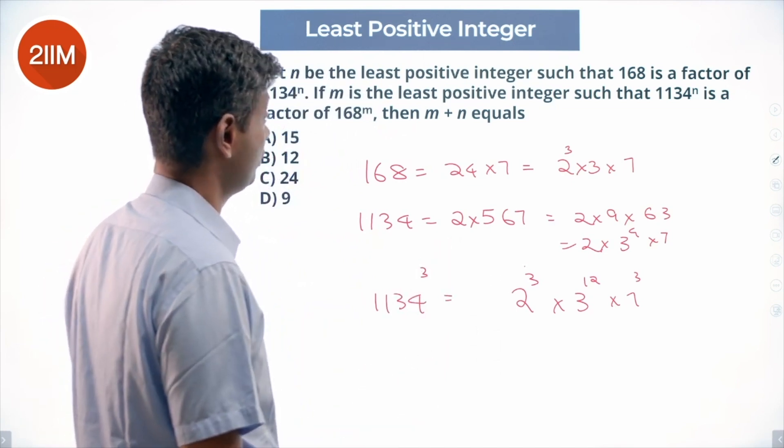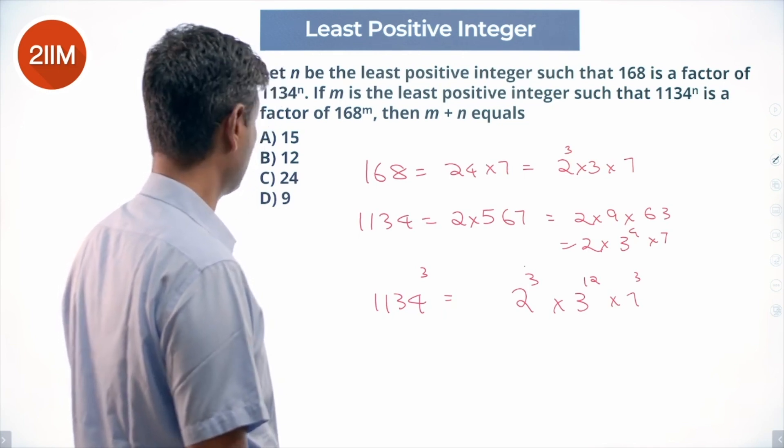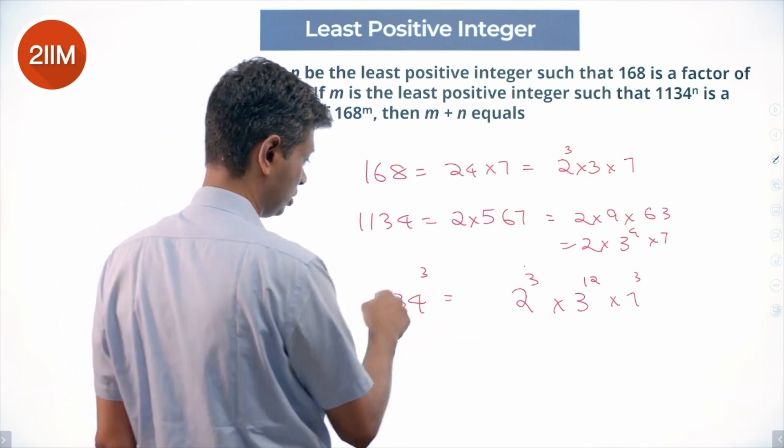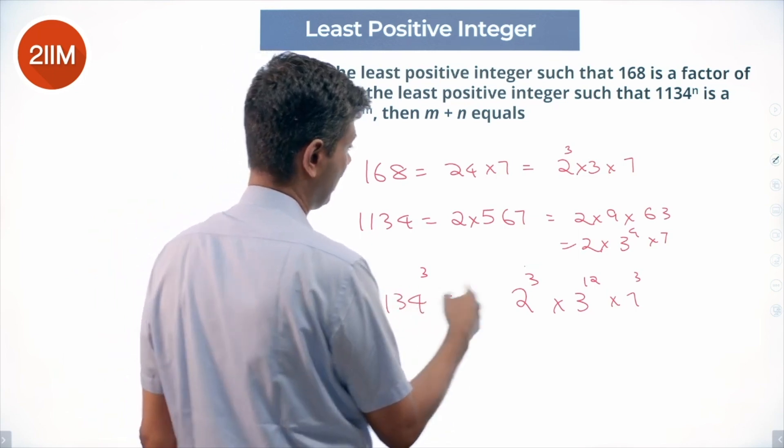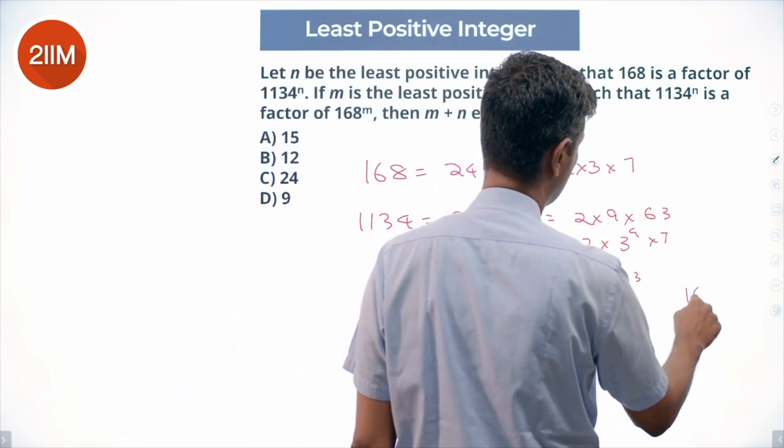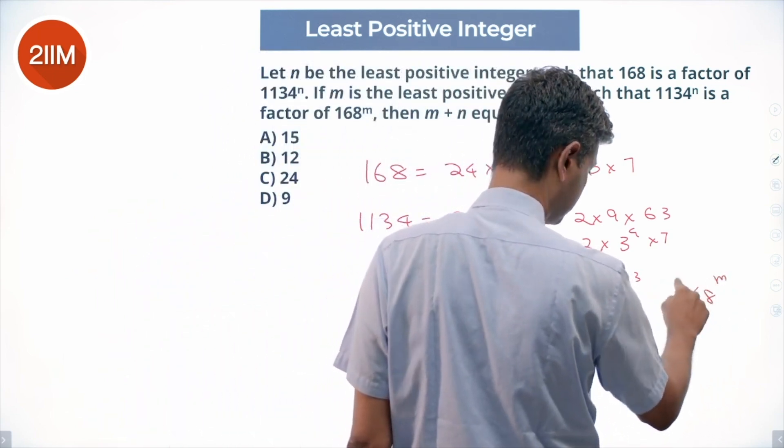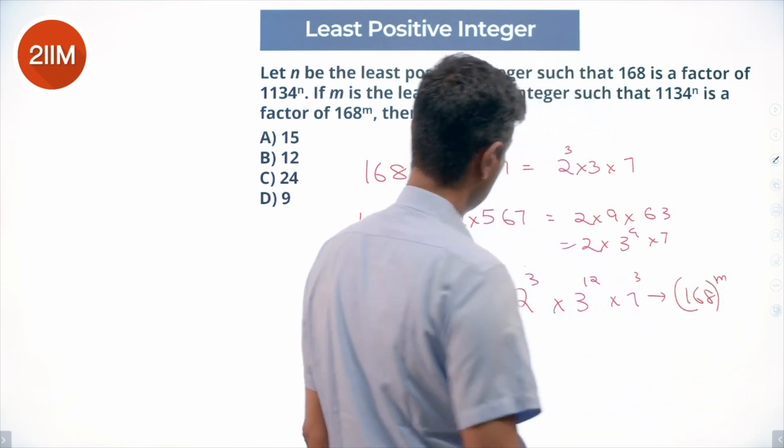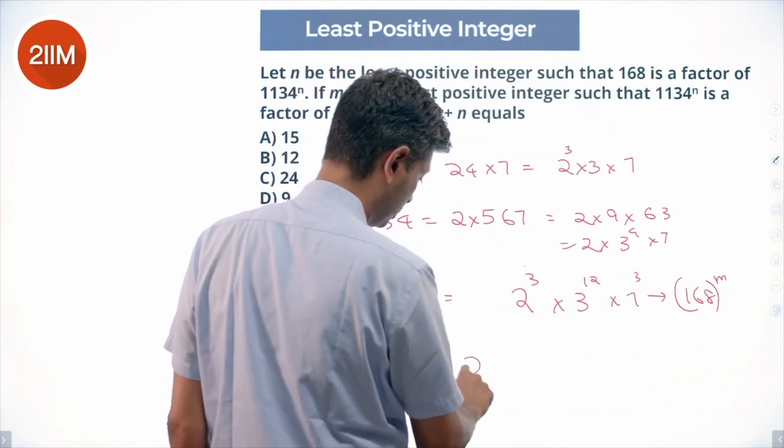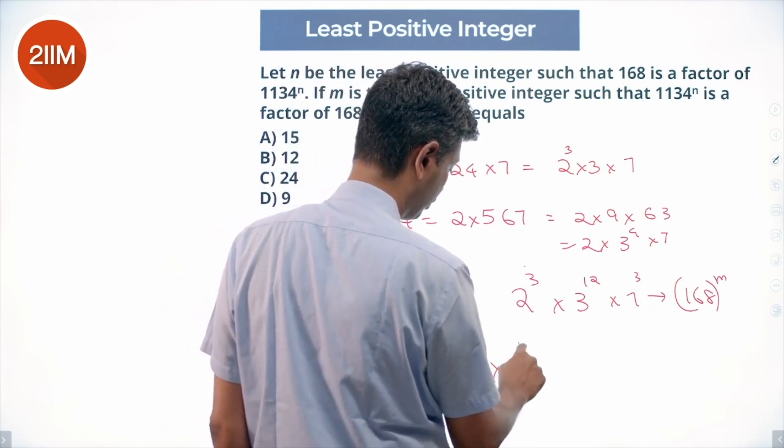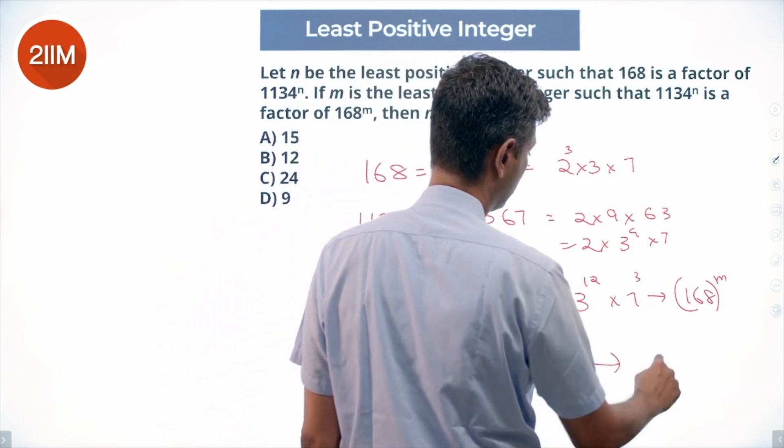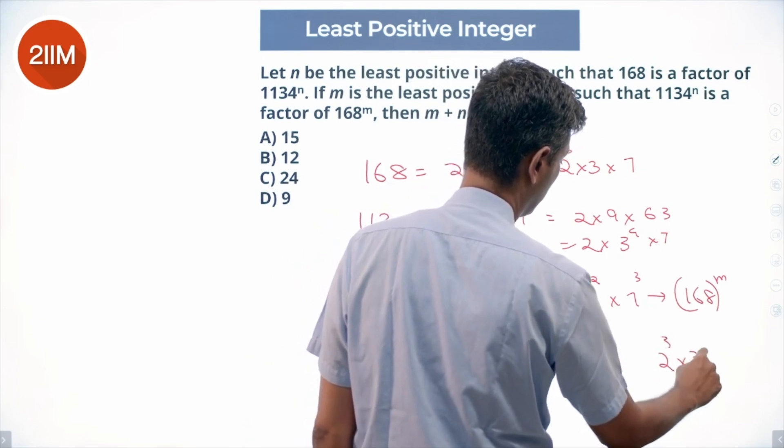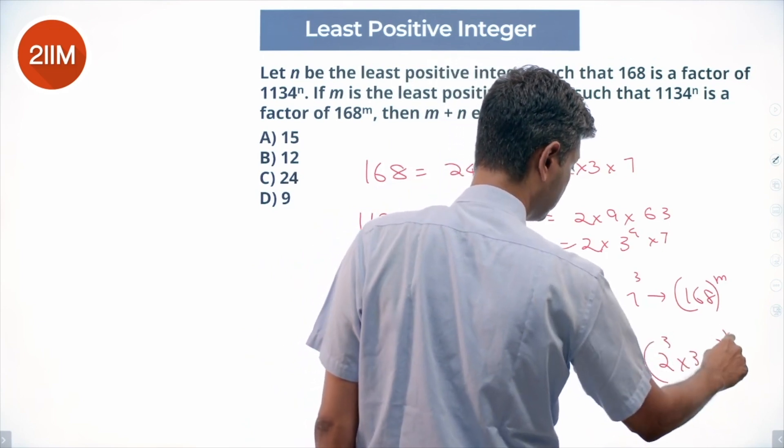m is the least positive integer such that 1134^n is a factor of 168^m. Nice. This is a factor of 168^m.